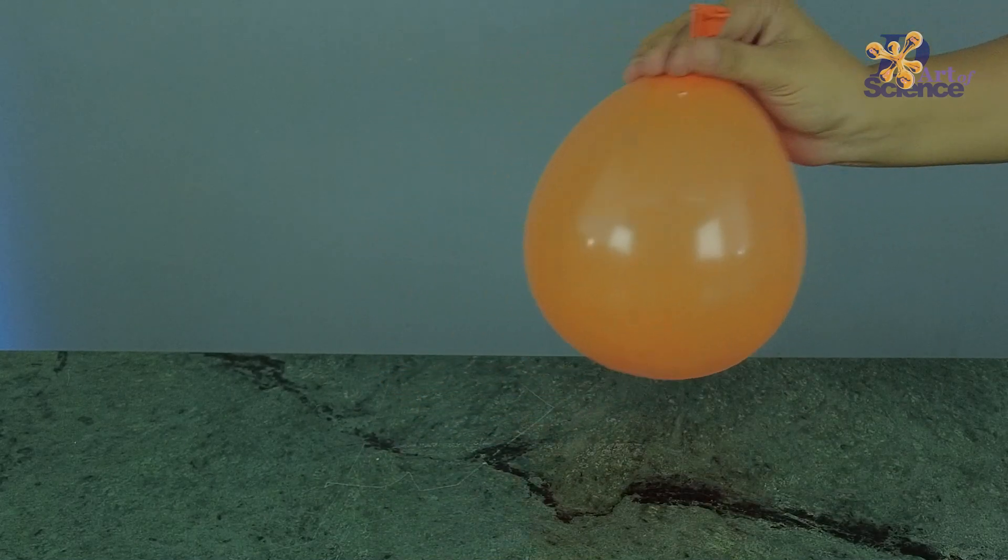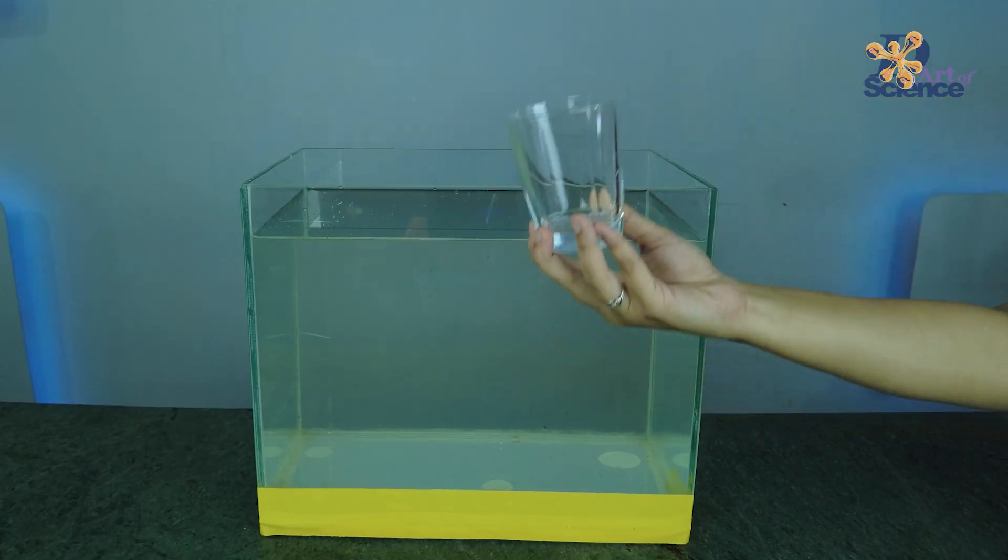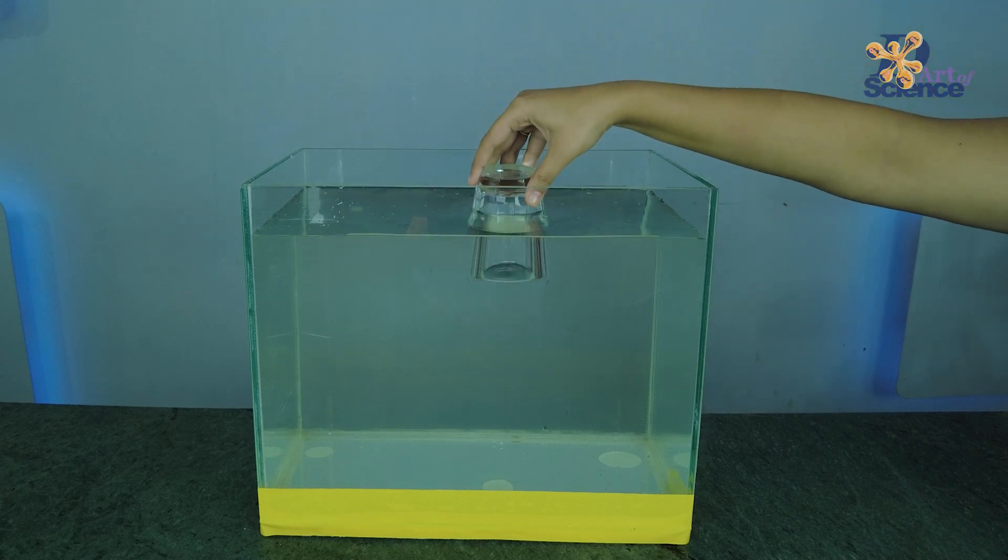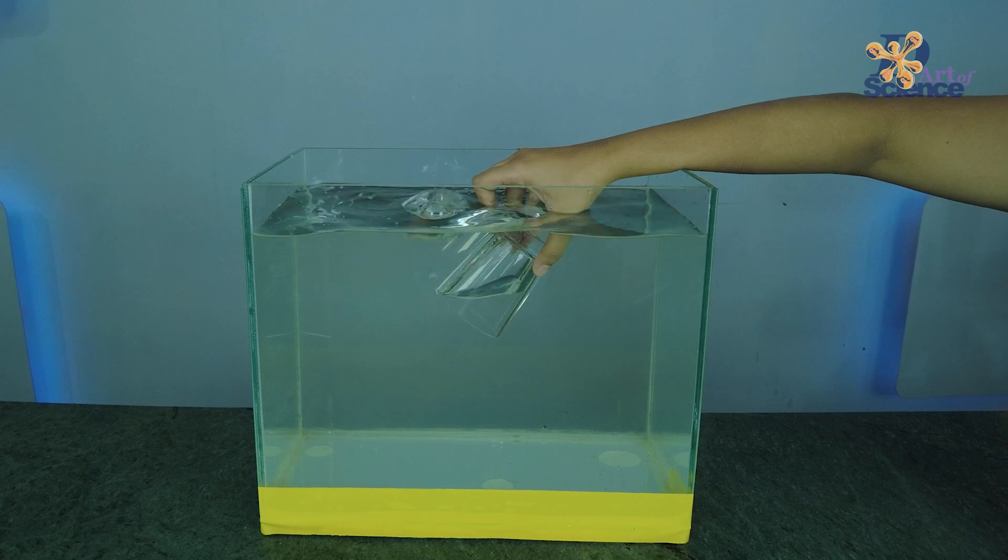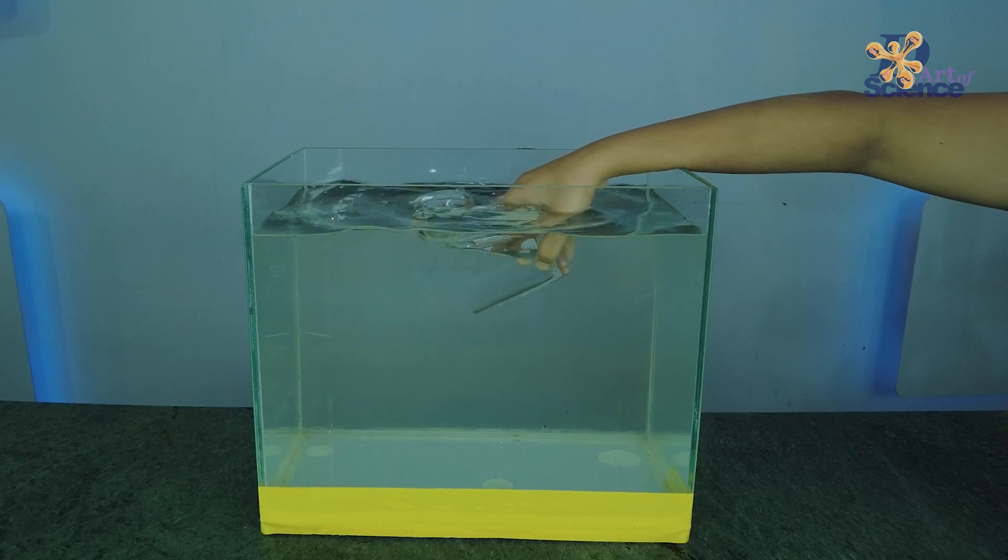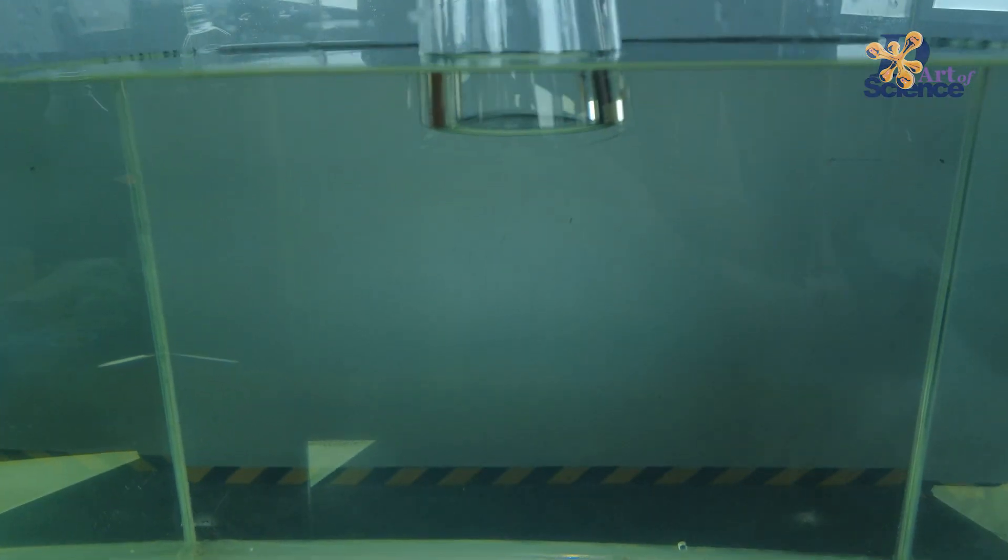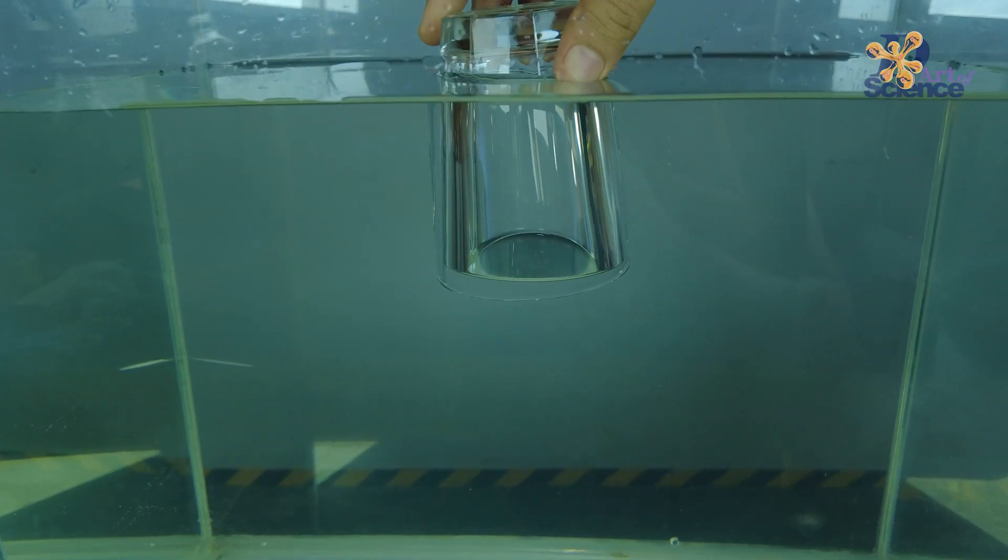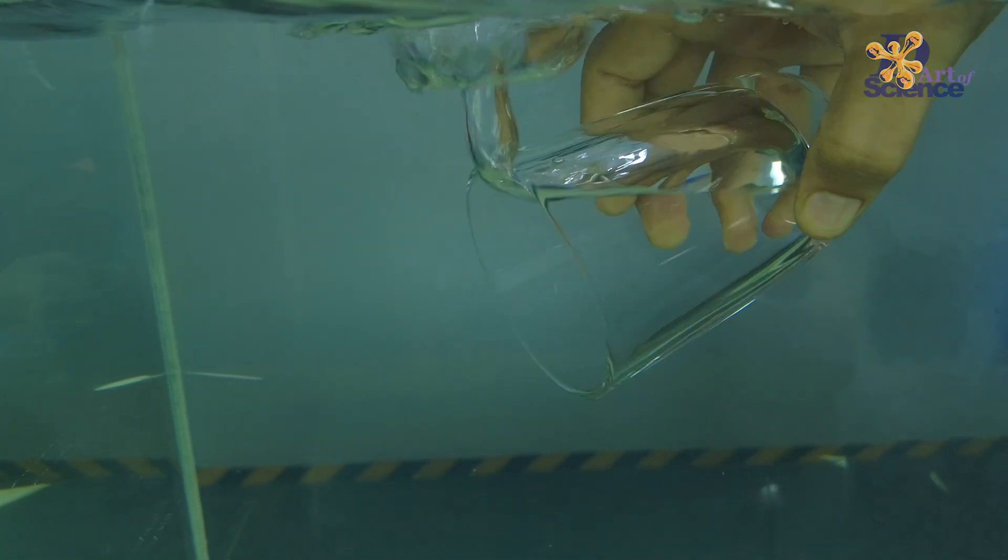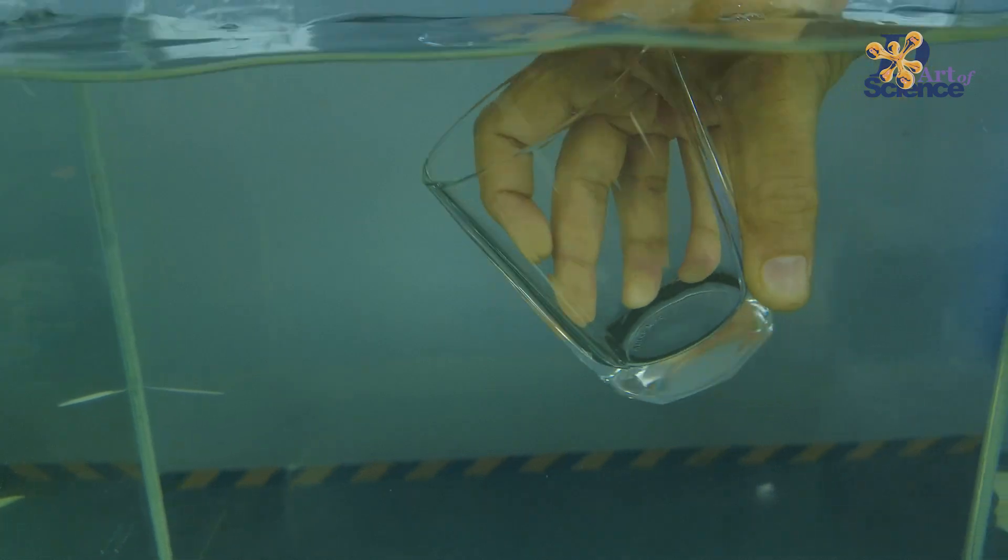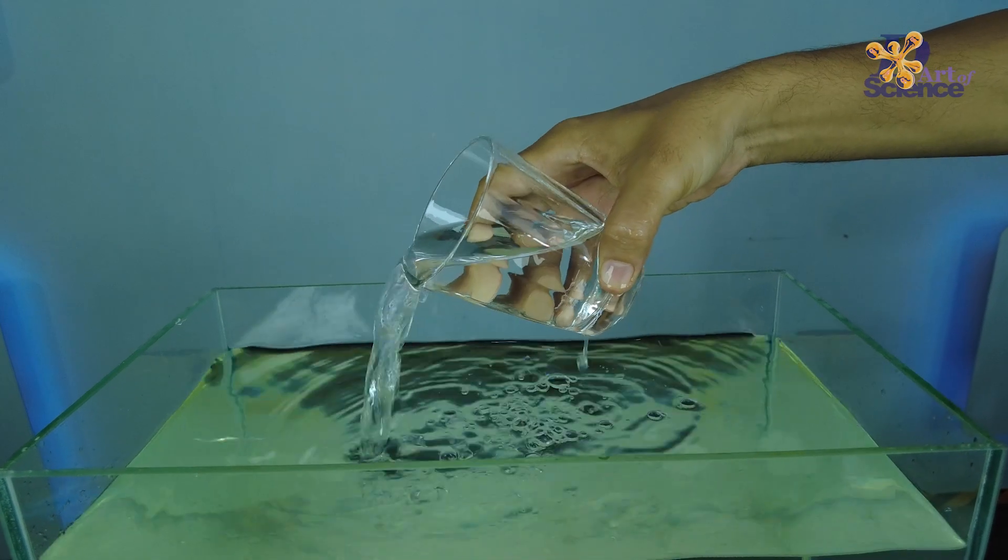Another way to show that air takes up space is to simply take a glass and push it upside down in a container of water. If you notice, water doesn't enter this glass because all the space inside is taken up by air. Air is less dense than water, so it is able to stay on top of the water. If we tip the glass, the air trapped inside will rush out in the form of bubbles, and in doing so it makes space for the water to enter the glass.